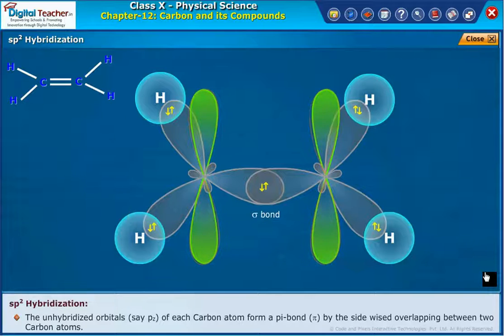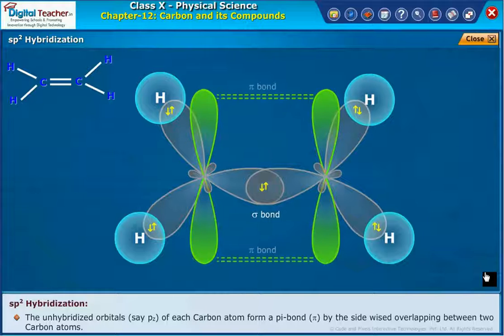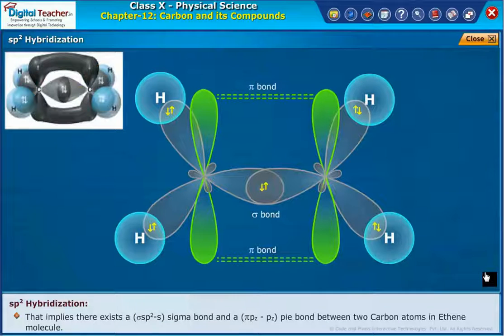The unhybridized orbitals, the pz of each carbon atom, form a pi bond by the sidewise overlapping between two carbon atoms. That implies there exists a sigma SP2-S sigma bond and a pz-pz pi bond between two carbon atoms in ethene molecule.